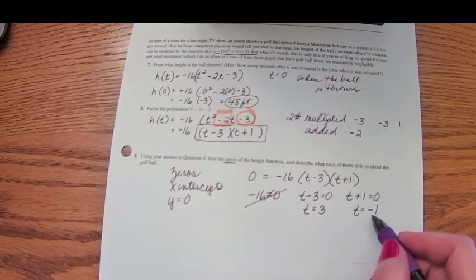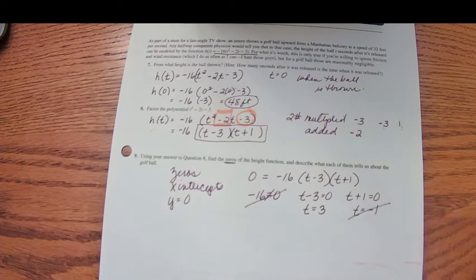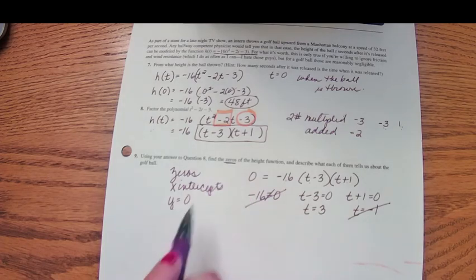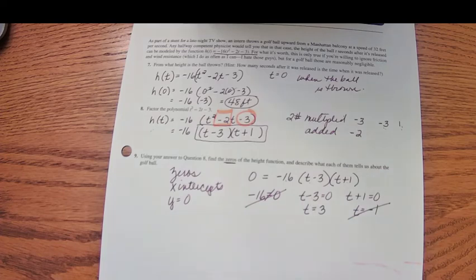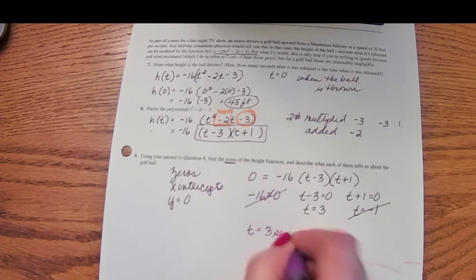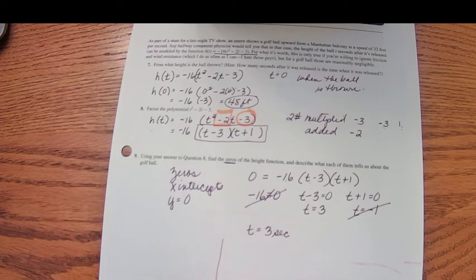It wouldn't make sense to go back in time—there's no time machine here. Time cannot be negative. So the only zero, the only time for this problem when this ball will actually hit the ground, is at t equals 3 seconds.